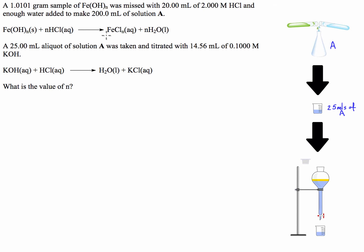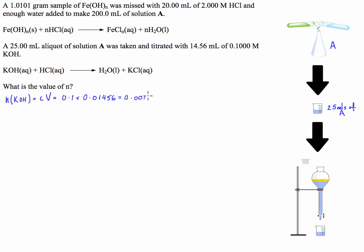First, we're going to calculate the number of moles of potassium hydroxide required in this reaction. The number of moles of potassium hydroxide equals concentration times volume, which is 0.1 times 0.01456, giving us a value of 0.001456 moles.